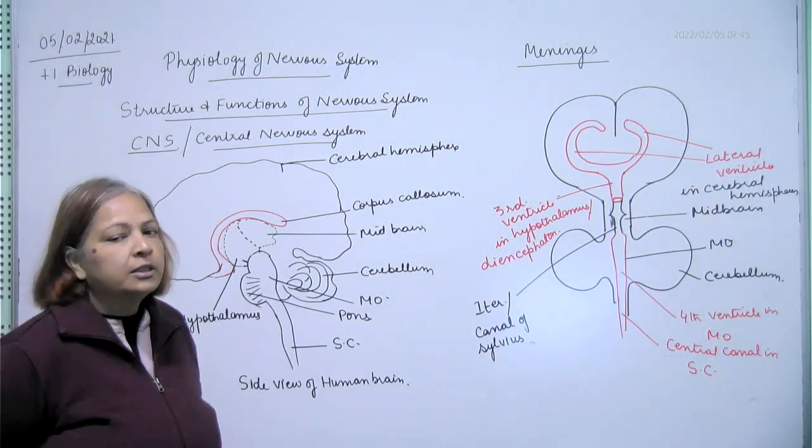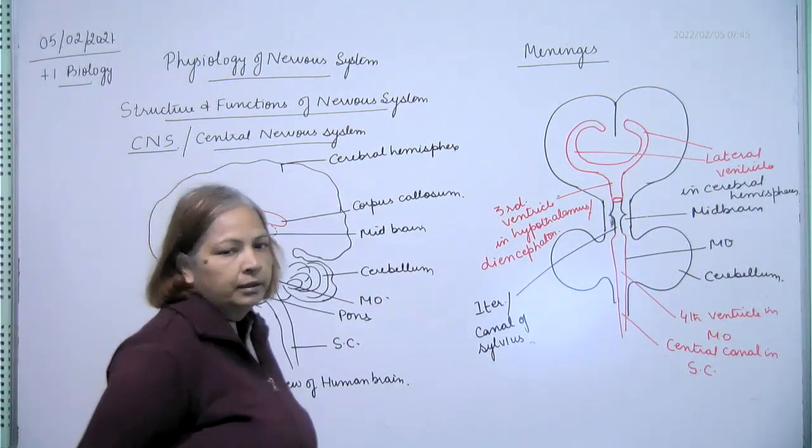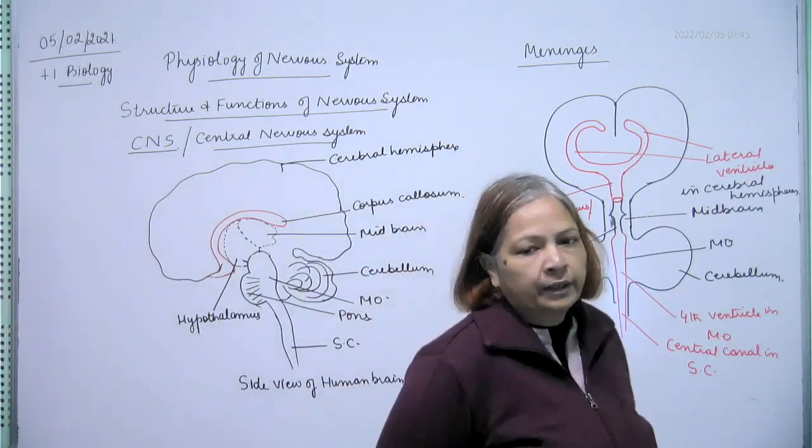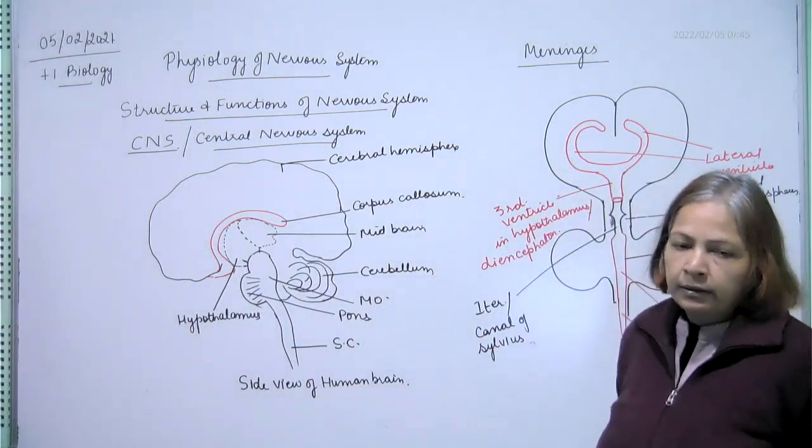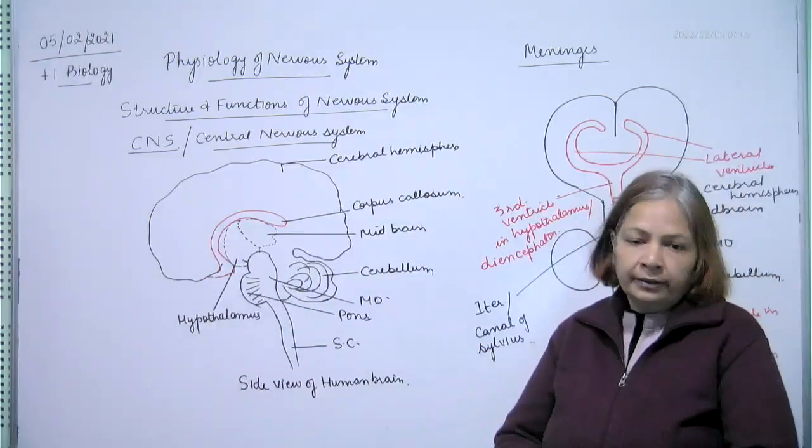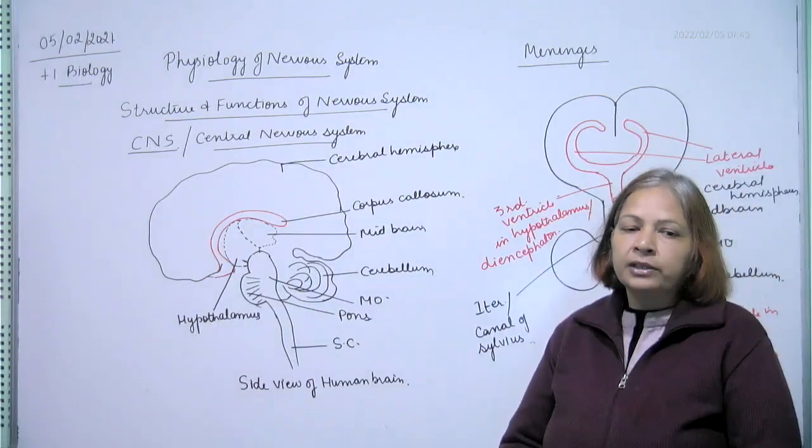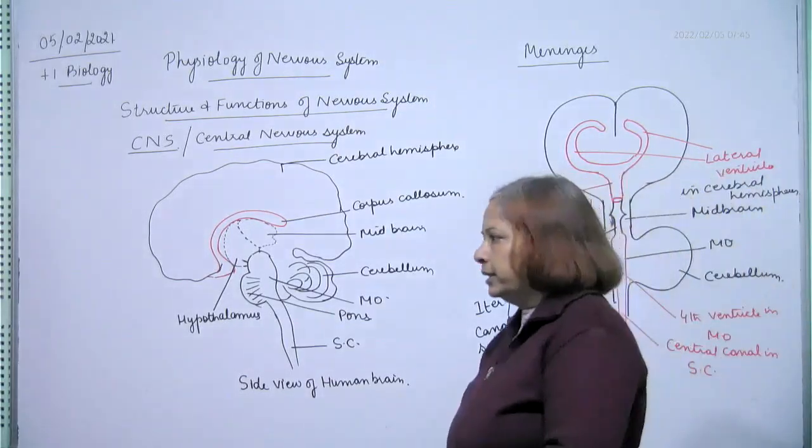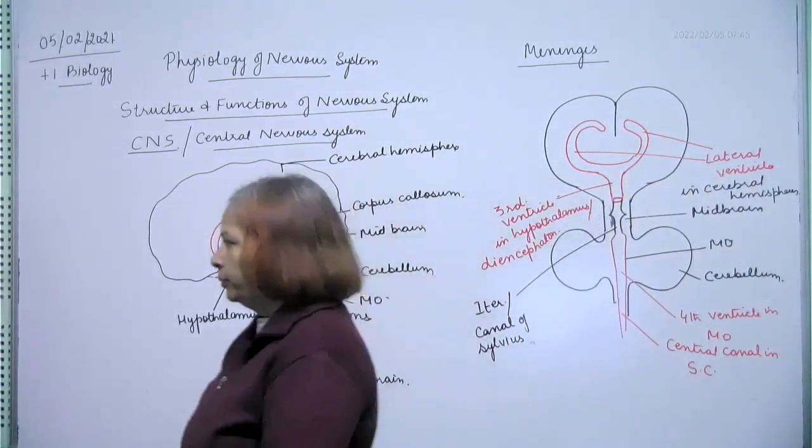Functions of CSF, functions of cerebrospinal fluid. First, it keeps the nervous tissue moist. It keeps the nervous tissue moist.